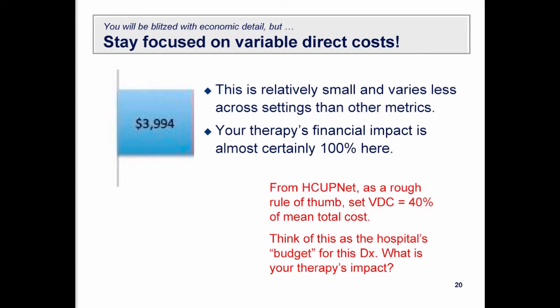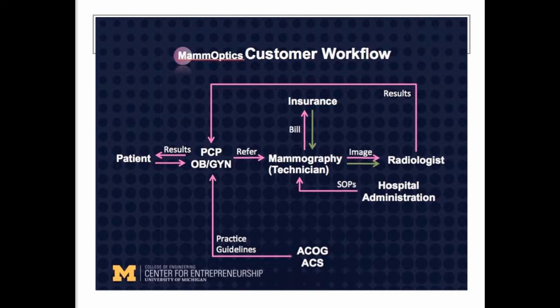Stay focused on variable direct costs. When you look in HCUPnet and see the procedure or diagnosis you're targeting, take the actual cost and apply about forty percent of that as the variable direct cost. That's a good starting point for understanding what hospital care costs. Your therapy's financial impact is almost certainly going to be one hundred percent on the variable direct cost because if a therapy is being administered to a patient, that's where it shows up.